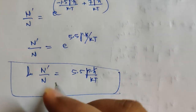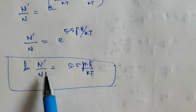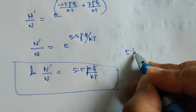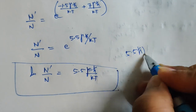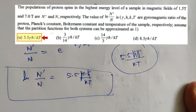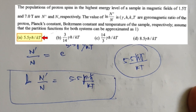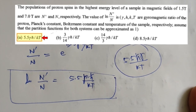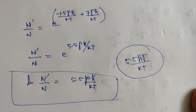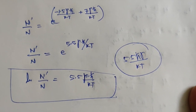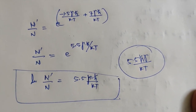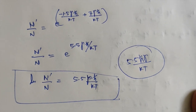They were asking about the value of ln(N-dash / N), and the answer is 5.5ℏγ / KT. You just need to know the Boltzmann distribution formula and the Larmor frequency. I hope you guys understood it well. That's all for this video — thank you so much for watching and have a great day. Bye-bye.